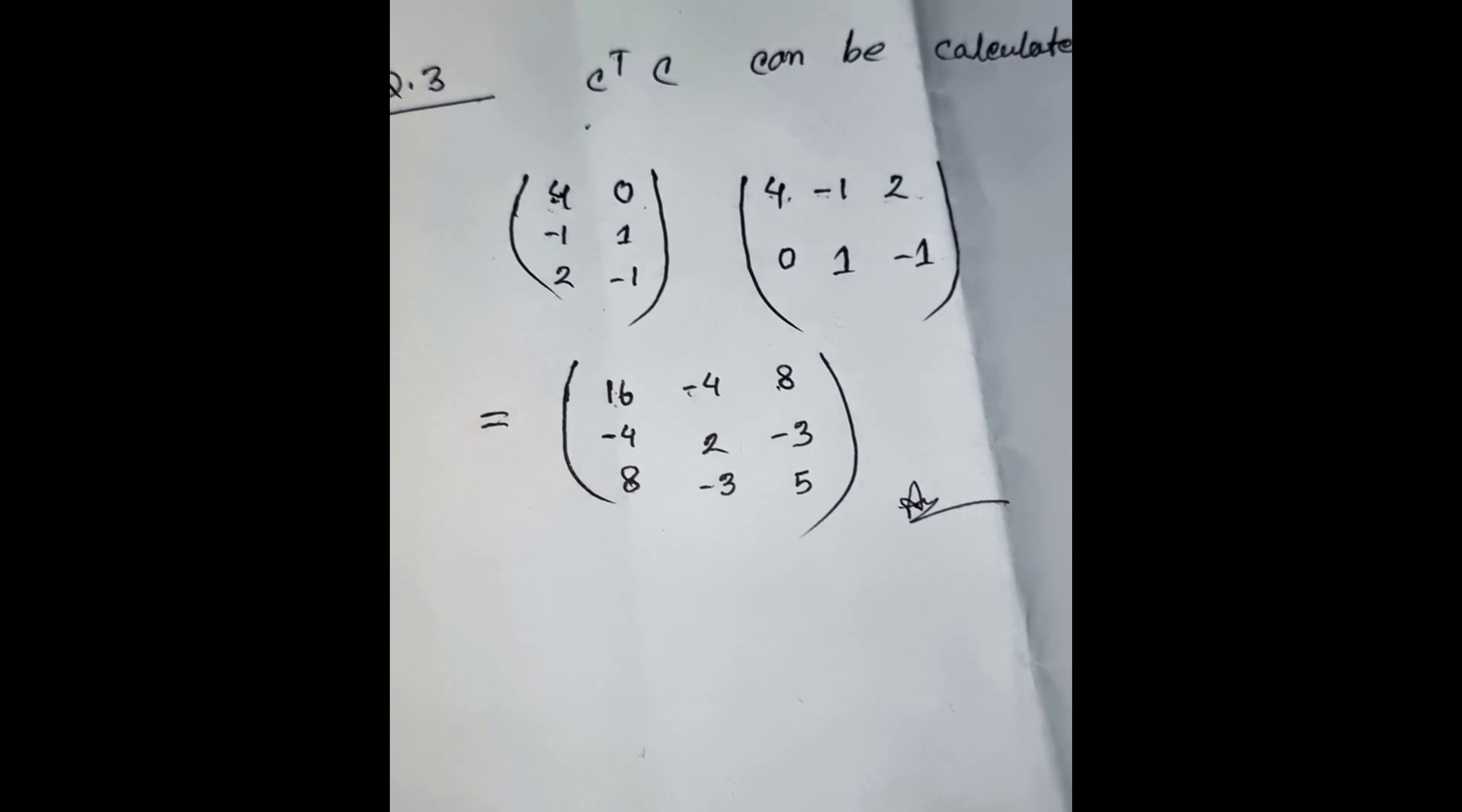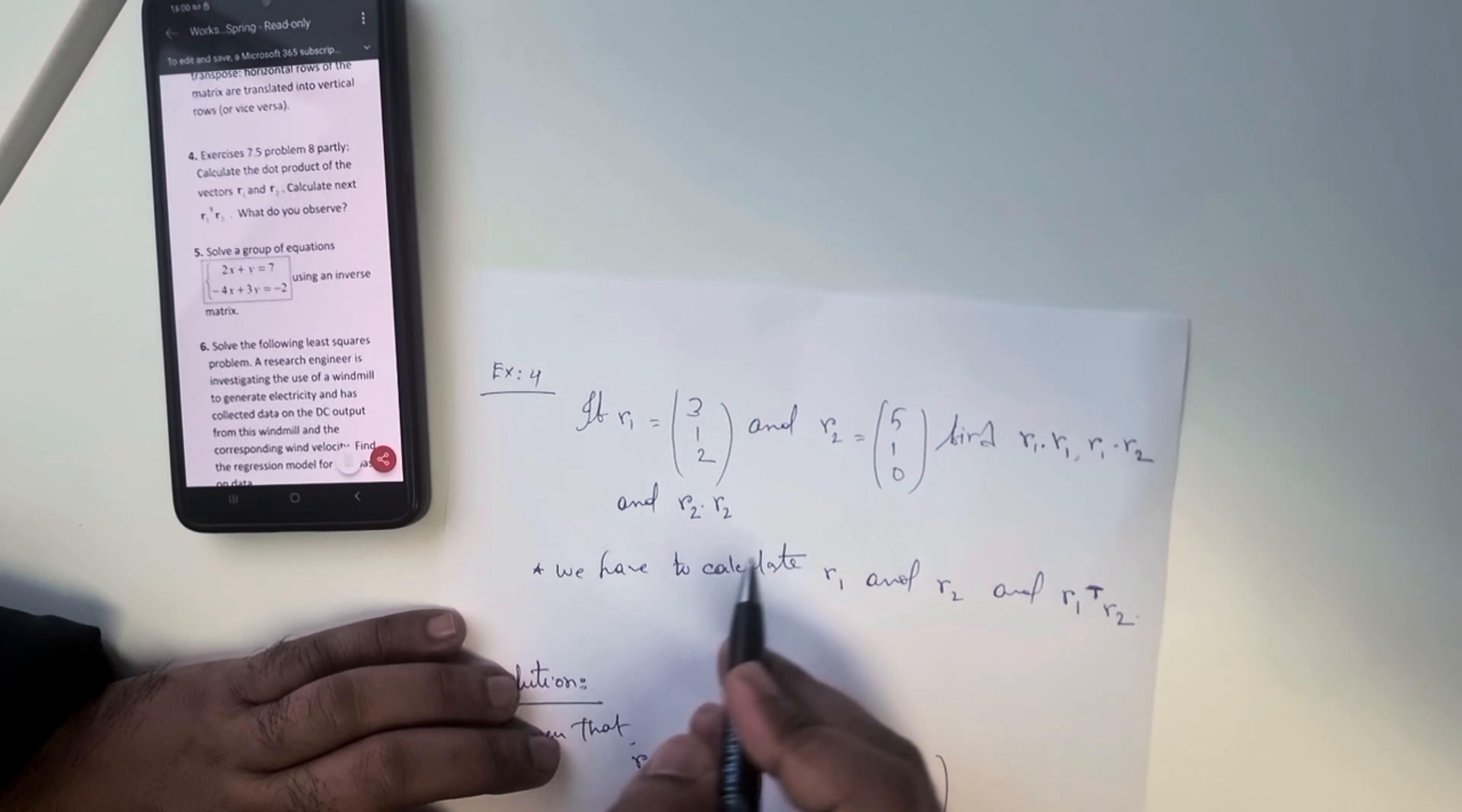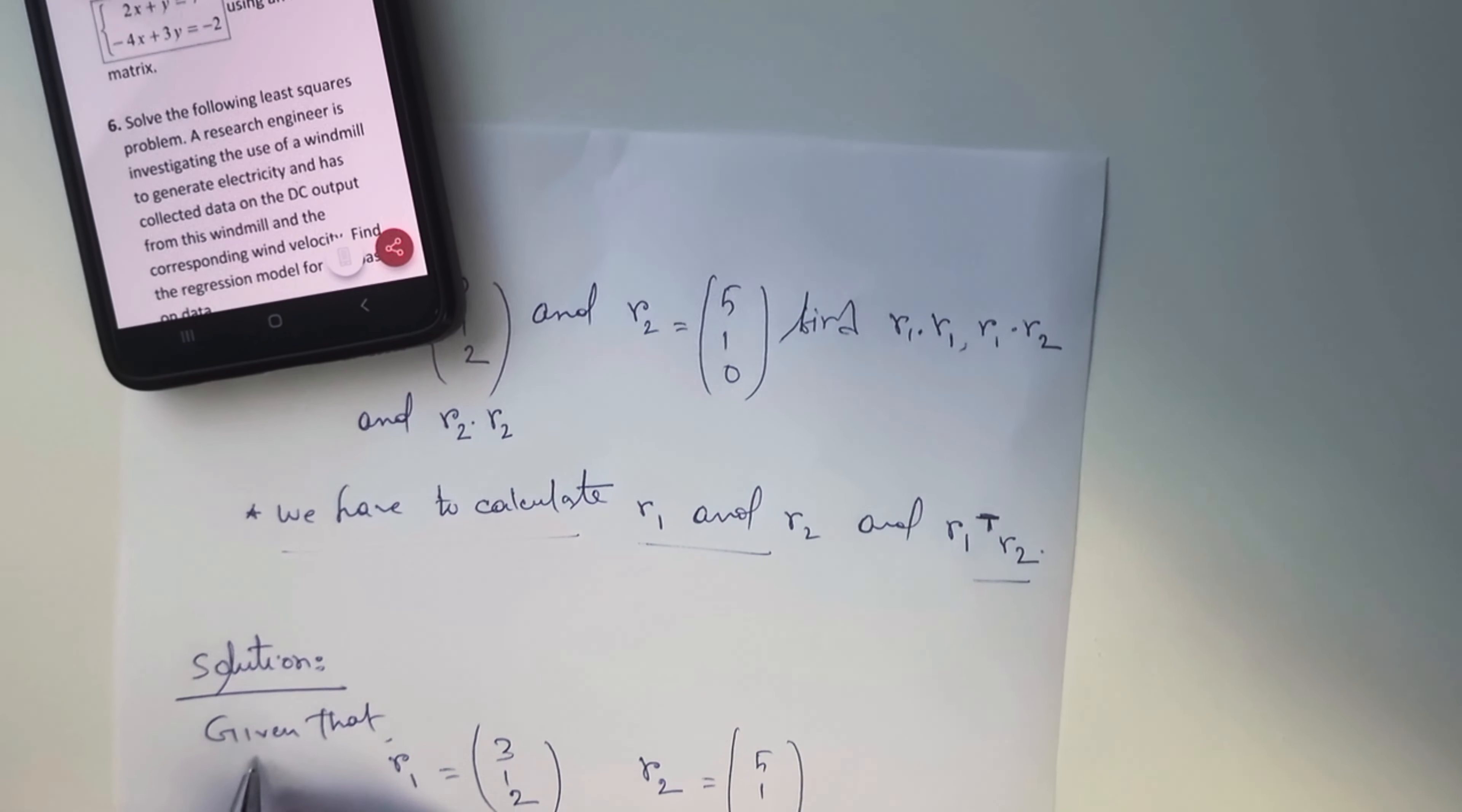Now we are solving exercise 4 and here is the question. From exercise 4 we already got r1 values and r2 values, so we have to calculate r1 dot r2 as per question and also calculate r1 transpose r2.